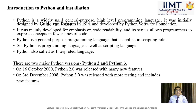There are two major Python versions: Python 2 and Python 3. Python 2.0 was released on 16 October 2000 with some features. Python continued to develop, and on 3rd December 2008, Python 3.0 was released with more testing and new features — meaning the new version came with more and more features compared to version 2.0.